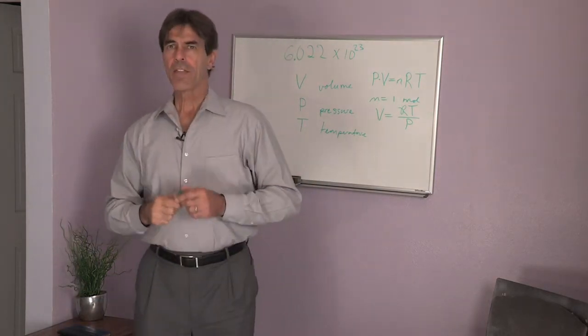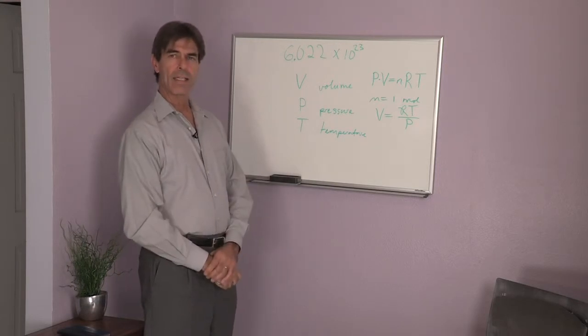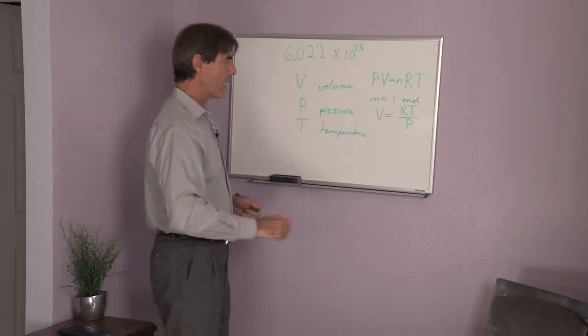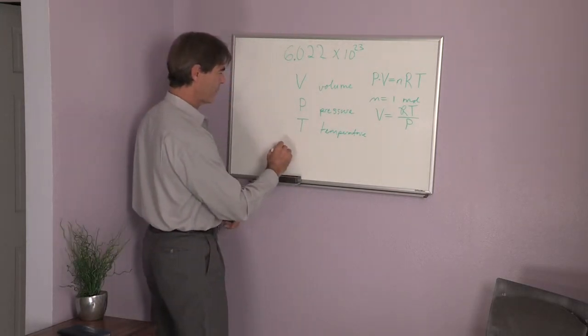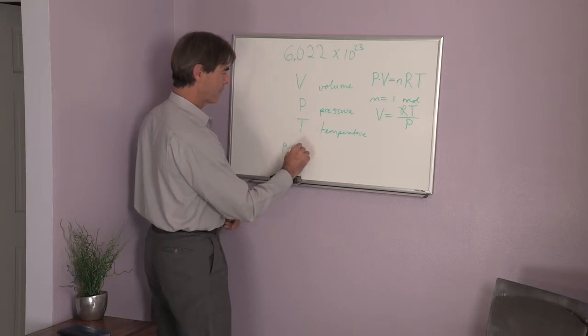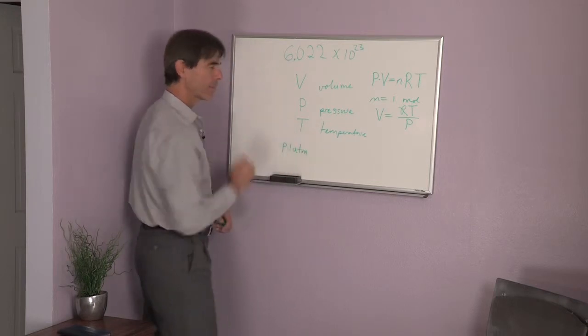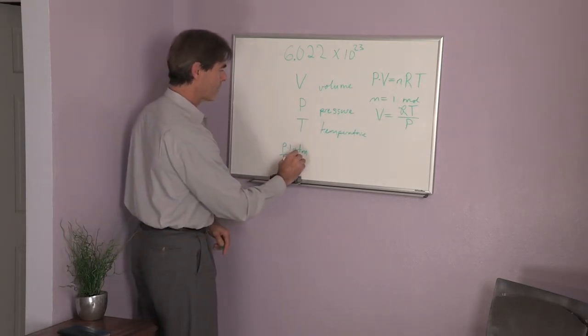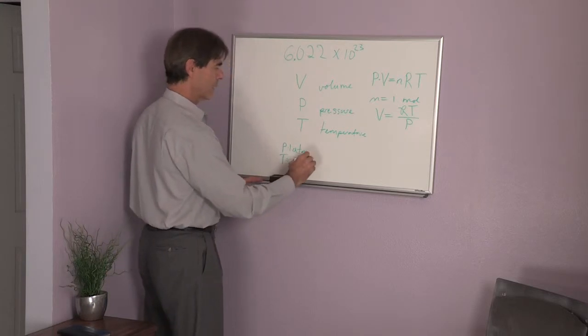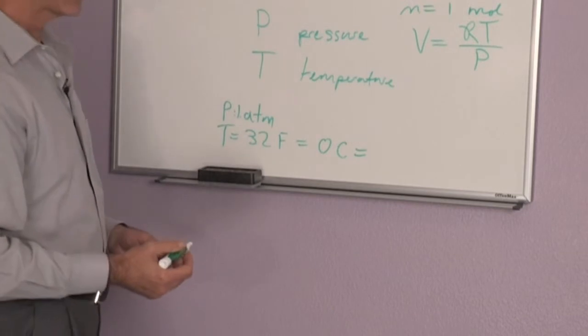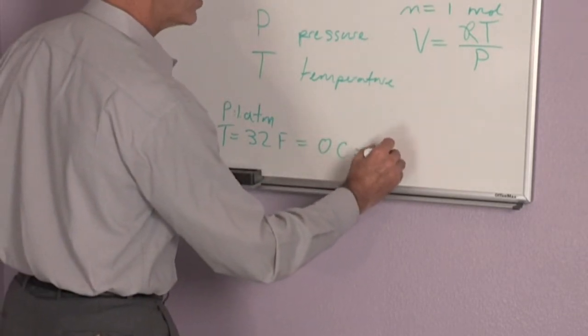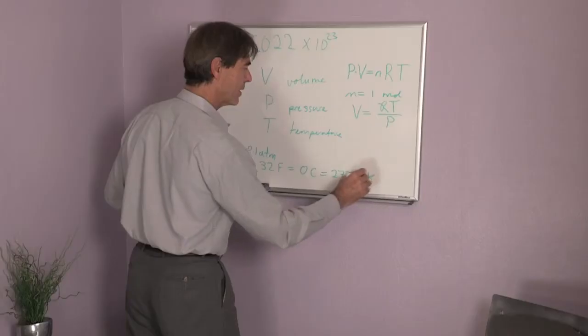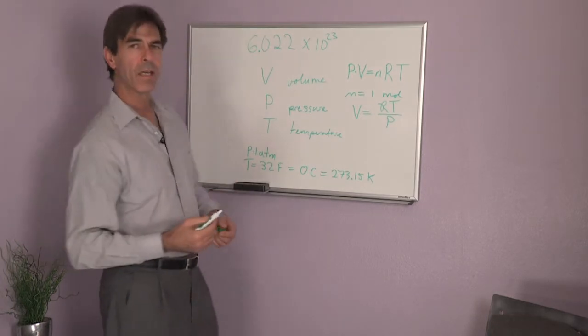Now there is something called the standard pressure and temperature. And that is if we had a pressure of one atmosphere, and we had a temperature equal to 32 Fahrenheit, that's zero Celsius. The Kelvin scale is 273.15 Kelvin. That's your standard pressure and temperature.